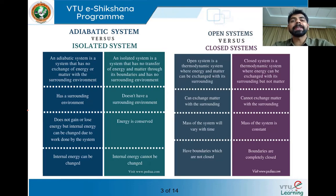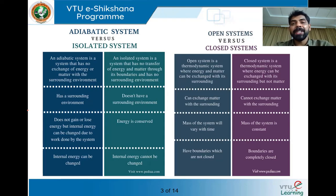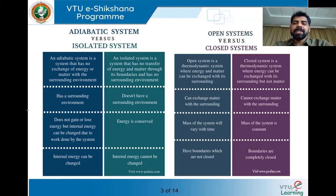A closed system is one where only exchange of heat takes place between the surrounding and the system, but there is no mass transfer. Mass will not be exchanged — only heat transfer can come into or go out of the system. Such a system is what we call a closed system.